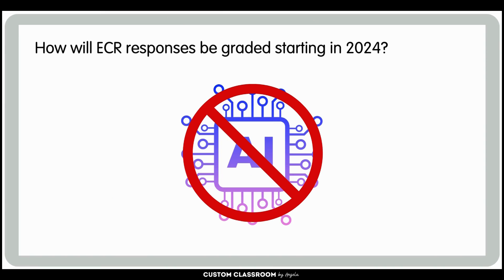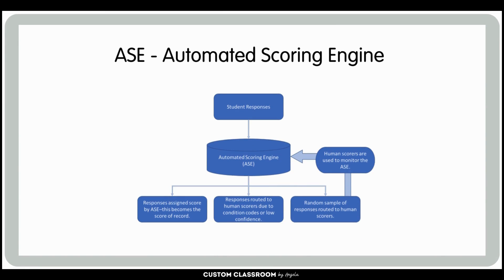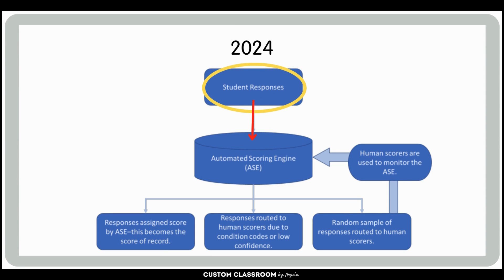First things first, let's clarify that the responses for the ECR, or extended constructed response, are not solely AI based. Instead, they undergo a hybrid grading process using a system called the ASE, or automated scoring engine. This system isn't a direct replica of AI but rather a sophisticated computer scoring system. Starting in 2024, the ECR responses submitted by students will be processed through the ASE model. If the ASE competently assigns a score to the response, the score becomes official record.